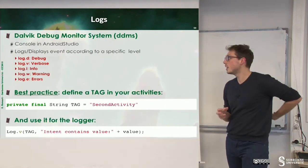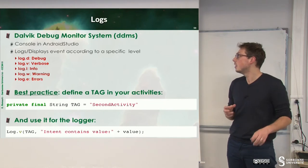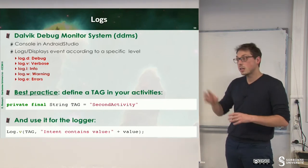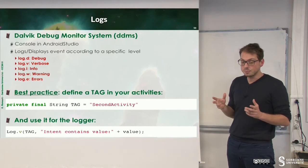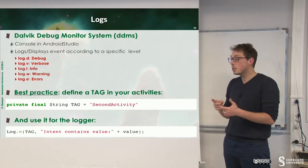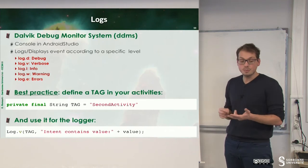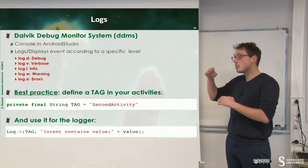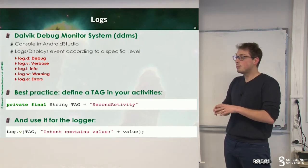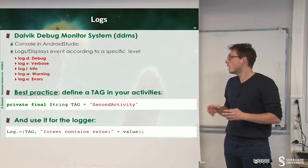To log things, you can use the logcat. And the logcat has multiple levels of logs. You can log debug, log verbose, log info, log warning, or log error. And according to this different level of logs, you will have more or less details.